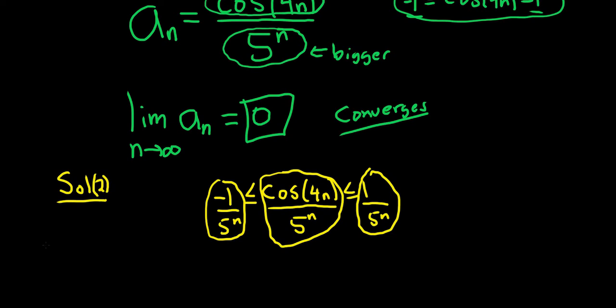Let's go ahead and write all that down. So the limit as n goes to infinity of negative 1 over 5 to the n, that's going to be 0 because the bottom is getting bigger and bigger, so it makes the fraction smaller. And the limit as n goes to infinity of the right-hand side of our inequality, 1 over 5 to the n, is also 0.